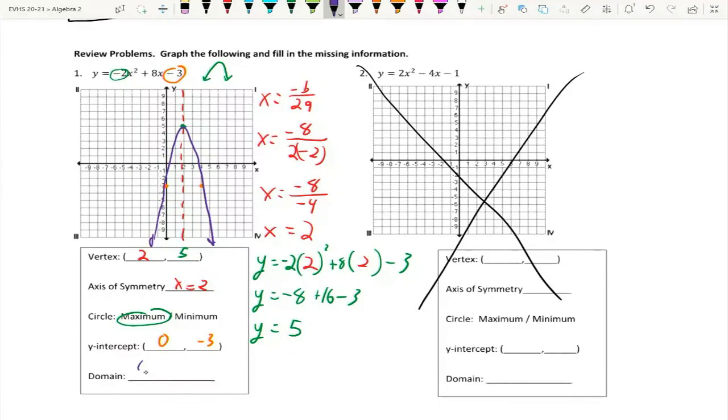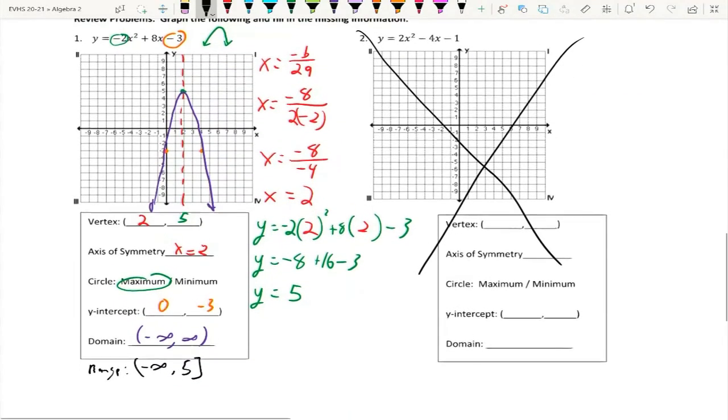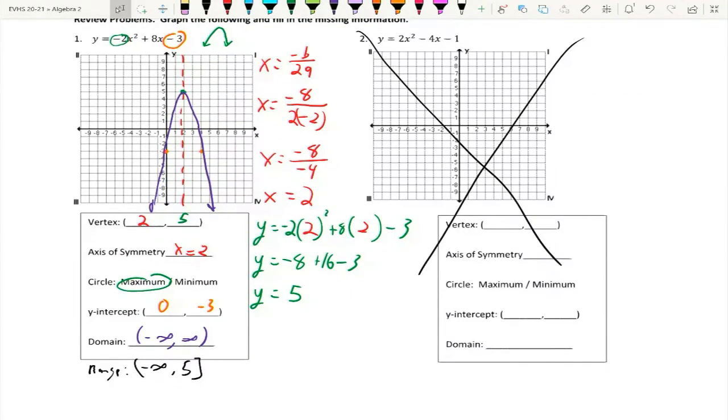Now, domain is negative infinity to infinity all the time. And I forgot to add it on here, but the range looks like my top value is 5 and negative infinity is the bottom value. So, there we go. Good luck on your assignment.